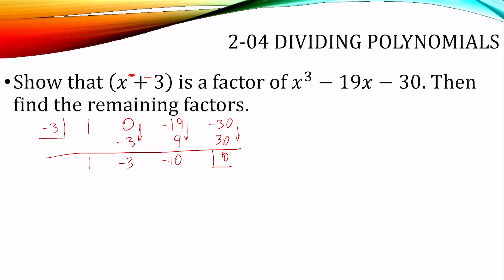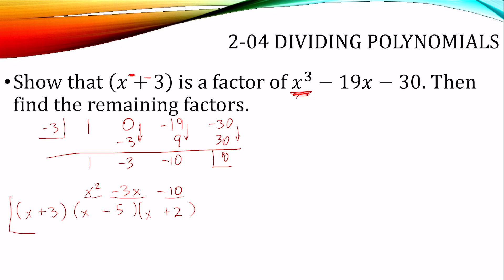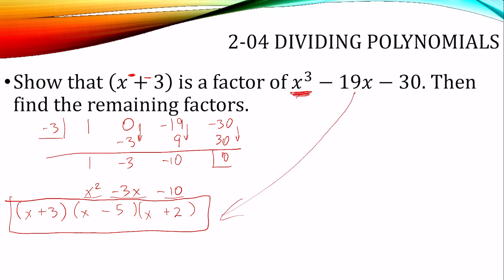Now we need to find the remaining factors. We had x cubed, so now we have the depressed polynomial x squared minus 3x minus 10, which is quadratic — we can just factor it. X squared is x times x; to get negative 10 we use negative 5 and positive 2, which adds up to negative 3 in the middle. So the remaining factors are x minus 5 and x plus 2. Writing x plus 3 in front, those are all the factors of our function.